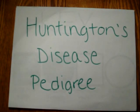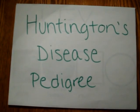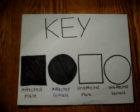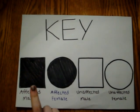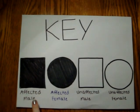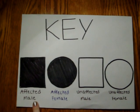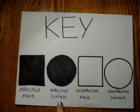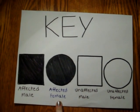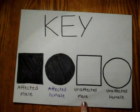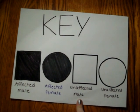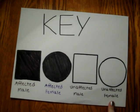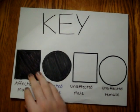This is a Huntington's disease pedigree. Here's the key: a black box represents an affected male, a black circle represents an affected female, a white box represents an unaffected male, and a white circle represents an unaffected female.